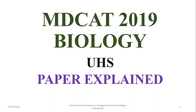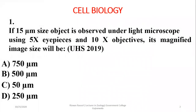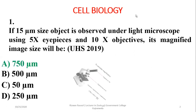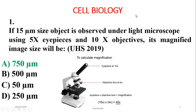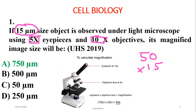Question 1 was about microscope magnification power: if a 15 micrometer object is observed under a light microscope using 5X eyepiece and 10X objective, its magnified size will be calculated by multiplying objective and eyepiece powers — 10X times 5X gives 50X. Multiplying 50 by 15 micrometers gives 750 micrometers, so the right option is alpha.